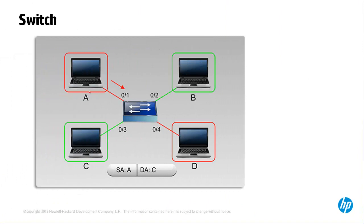What would happen if A sent a unicast frame to C? A is in the red VLAN and C is in the green VLAN. A wouldn't normally be able to learn the MAC address of C, so we're assuming that A has somehow learnt it — perhaps guessing the MAC address or using a hacking tool to try to access a machine in a different VLAN. The devices are unaware of VLANs, so they send standard Ethernet frames.